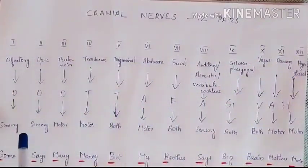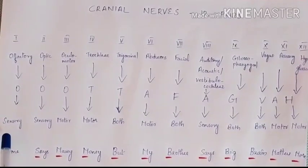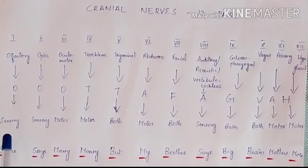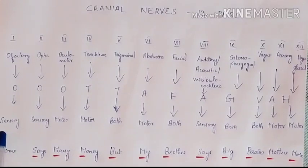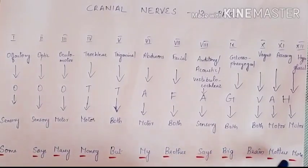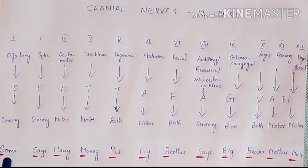We also need to know whether these nerves are sensory, motor, or mixed nerves — mixed meaning both sensory and motor functions. For that we can use this mnemonic: 'Some Says Marry Money But My Brother Says Big Brain Matters More.' Here S indicates sensory, M indicates motor, and B indicates both.